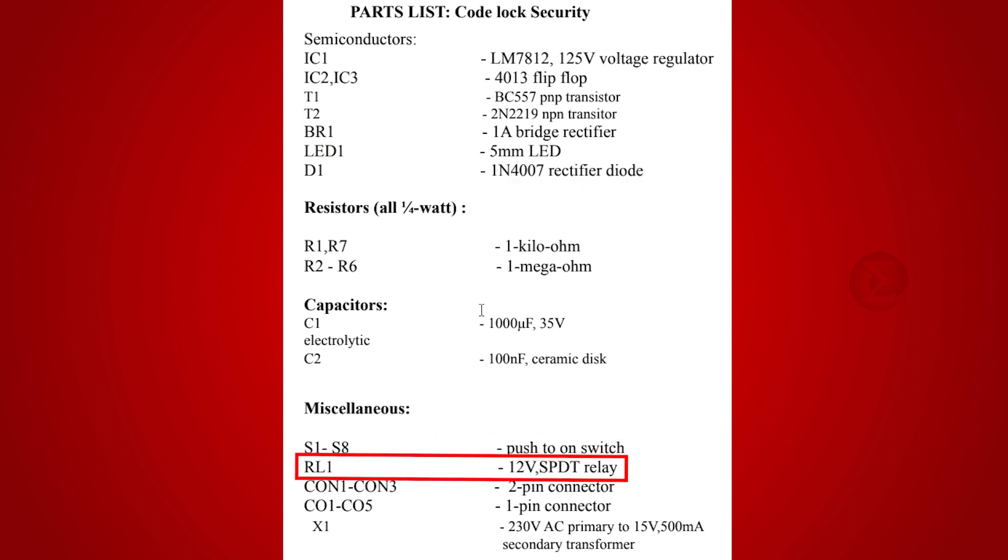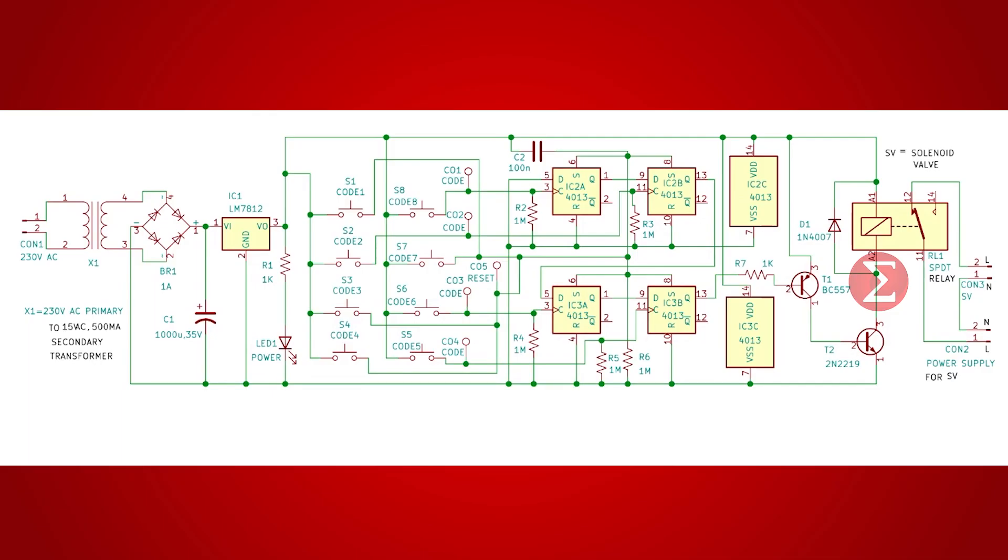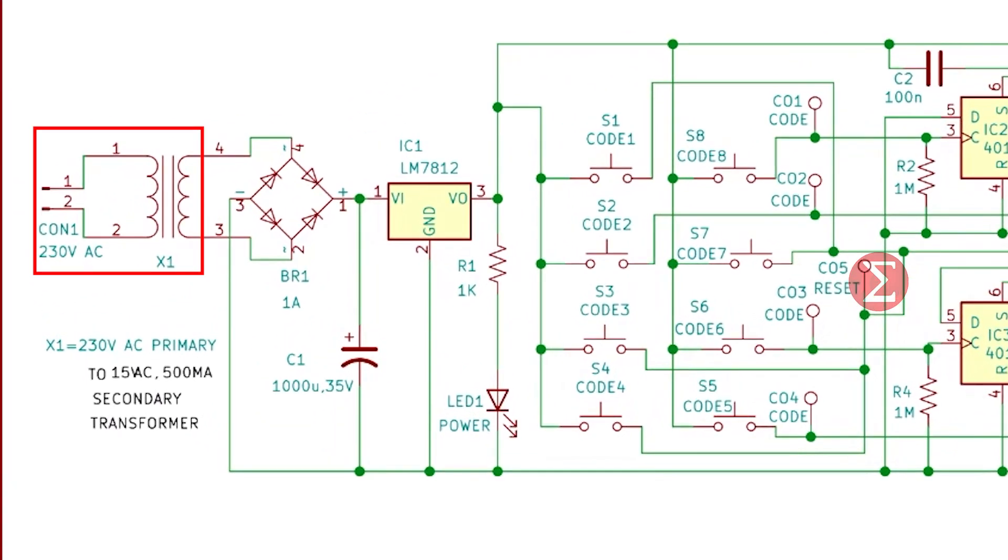eight push buttons, a 12V relay, a transformer, some resistors, some capacitors, few jumper wires, and a breadboard. Let us take a look at the circuit now. The transformer, bridge rectifier, and voltage regulator IC is used to give a fixed supply to our circuit.